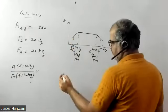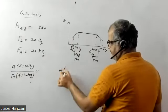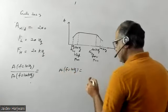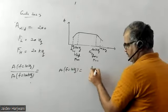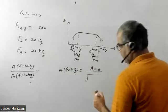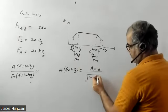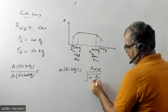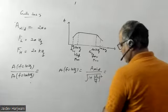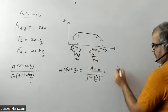If I want to calculate gain at frequency 10 Hertz, the gain will be A_mid. This is high pass cutoff frequency, so this will be 1 plus FC1 upon F square. FC1 is given as 20 Hertz and F is 10 Hertz. This will give me A_mid divided by 1 plus 2 square, that is A_mid divided by under root 5.